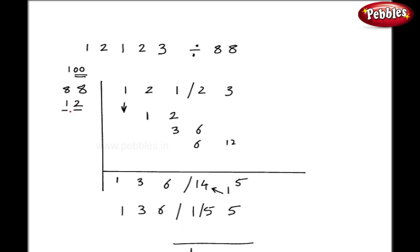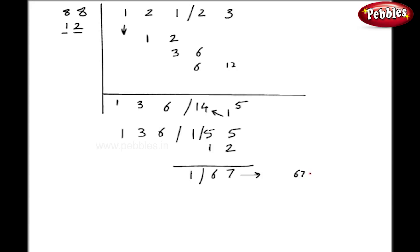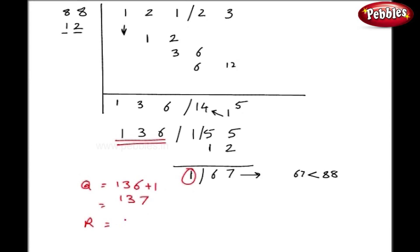155 is again bigger, so let me carry forward. Take this 1 down. Multiply individually: 1 into 1 is 1, 1 into 2 is 2. So I get 6 and 7. Now 67 is less than 88, so my division is over. My quotient is 136 on the left-hand side, and to that I add this 1, so my quotient is 137 and my remainder is 67 on the right-hand side.